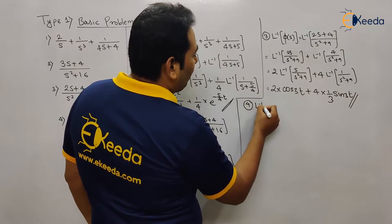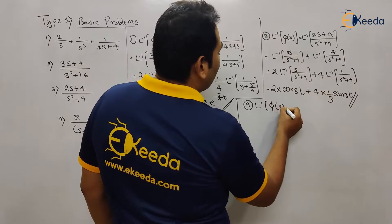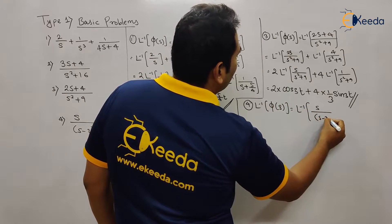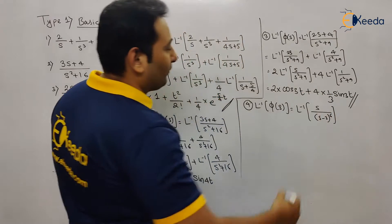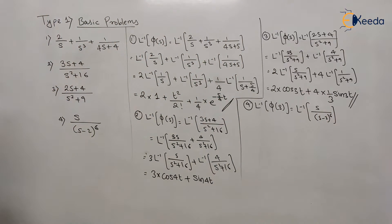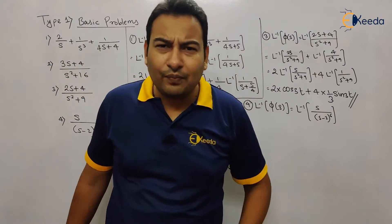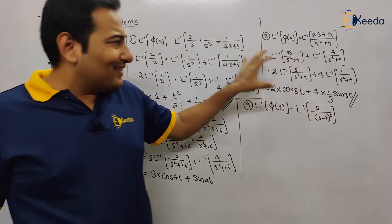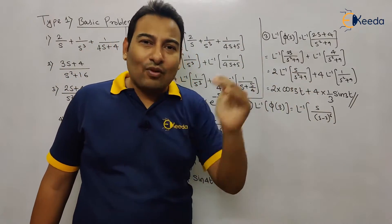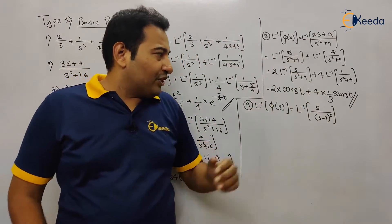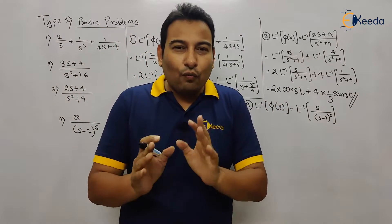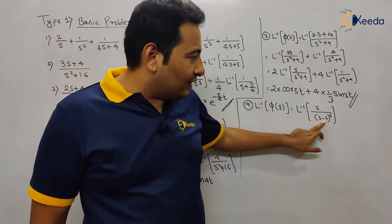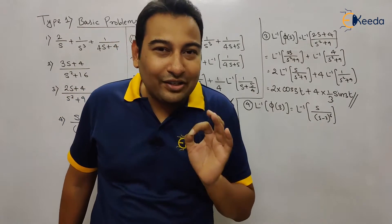Last example for this video: Laplace inverse of phi(s) = Laplace inverse of s/(s−2)⁶. Please tell me how to find the Laplace inverse of this term. Do you find shifting here? The s is shifted by minus 2 in the denominator. And the answer should be no — this is not a shifting case.